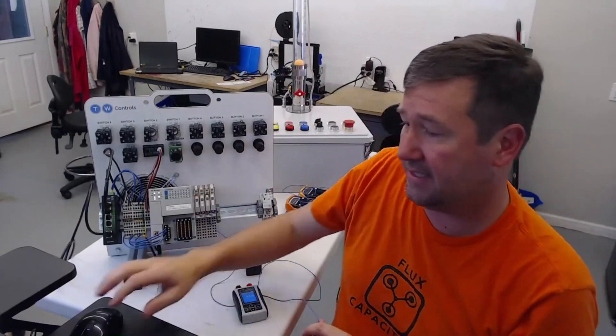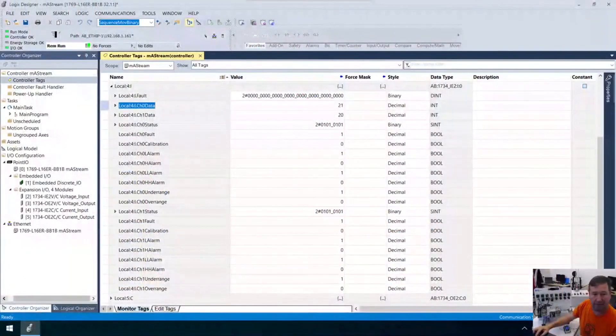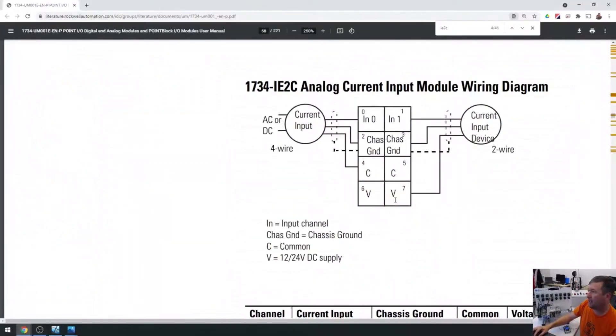So now this wire needs to go to our plus 24. But first, let me do it exactly like they have it. And so if we go and look at the wiring diagram, they're showing it going out of the bottom terminal. Now again, I'm using input 0 here, but we're coming out of this voltage terminal here for our two wire device. So I am going to take this wire loose and put it on that bottom terminal.